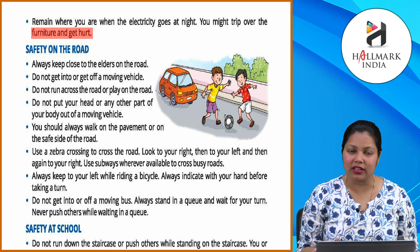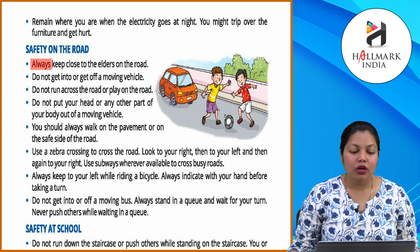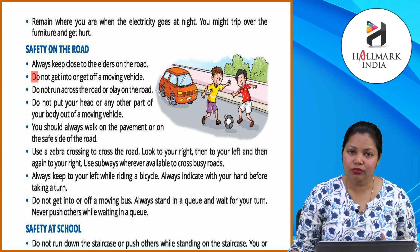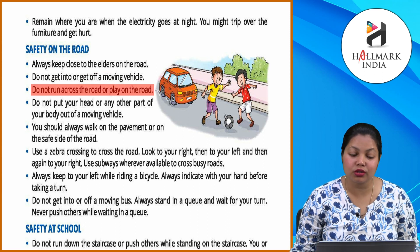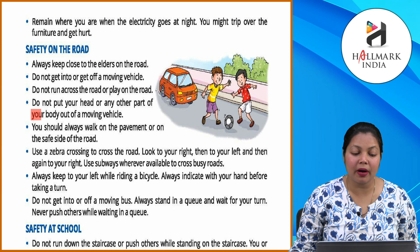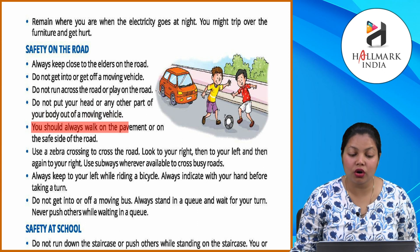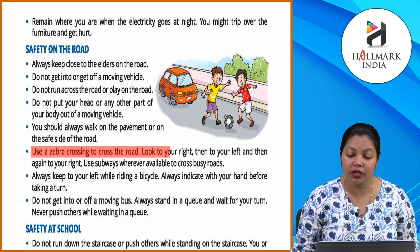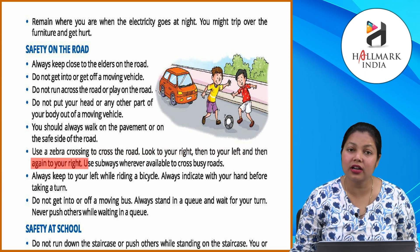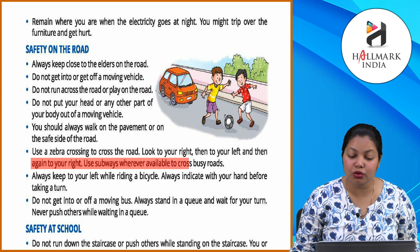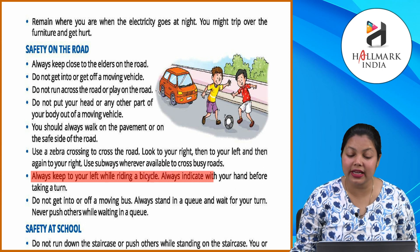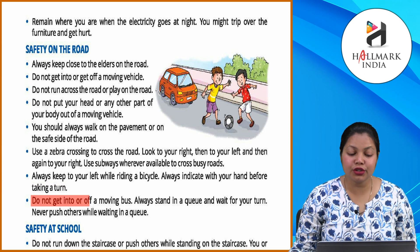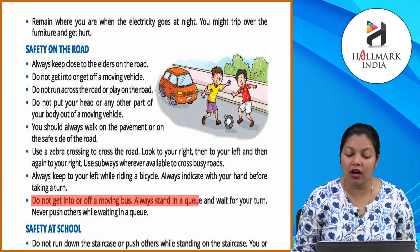Safety on the road: Always keep close to elders on the road. Do not get into or off a moving vehicle. Do not run across the road or play on the road. Do not put your head or any other part of your body out of a moving vehicle. Always walk on the pavement or on the safe side of the road. Use a zebra crossing to cross the road — look right, then left, then right again. Use subways wherever available to cross busy roads. Always keep to your left while riding a bicycle, and always indicate with your hand before taking a turn.